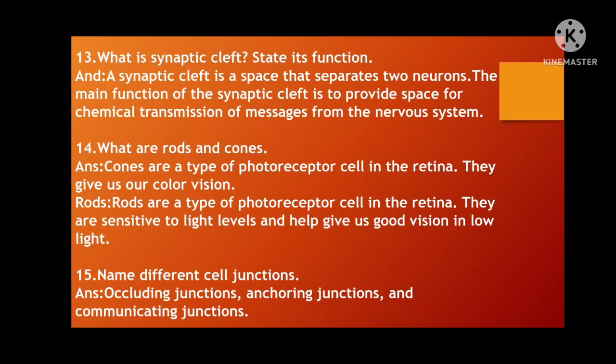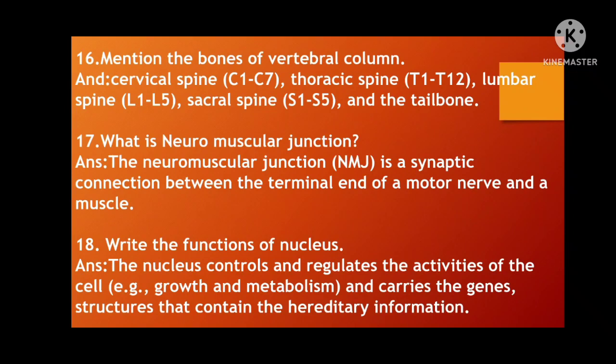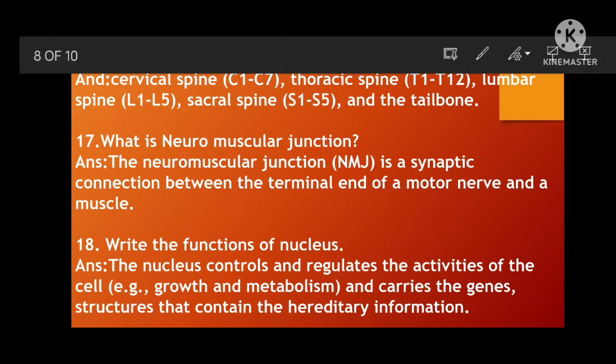Next: Name the different cell junctions — occluding junctions, anchoring junctions, and communicating junctions. Then: mention the bones of the vertebral column — cervical spine, thoracic spine, lumbar spine, sacral, and the tailbone (coccyx).